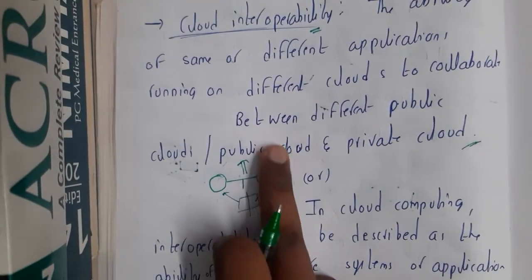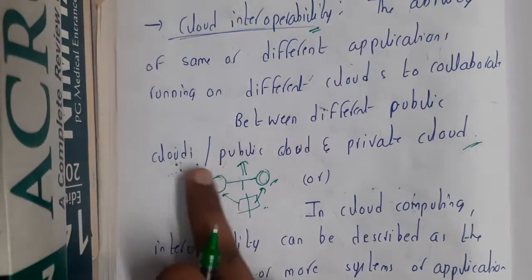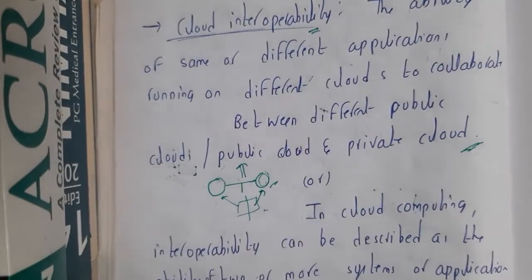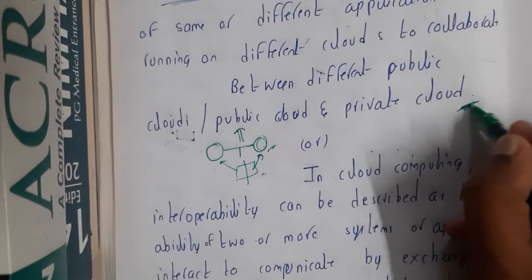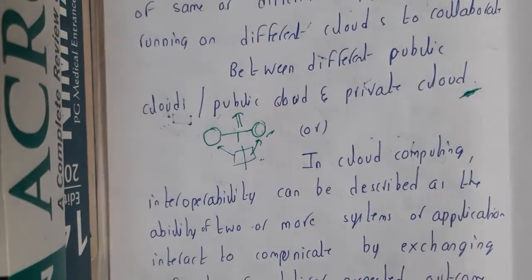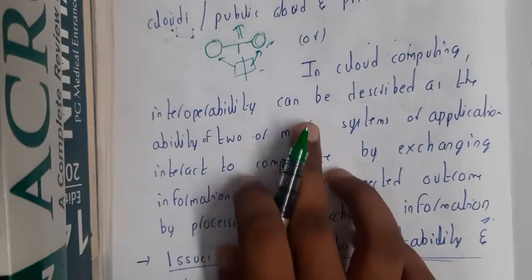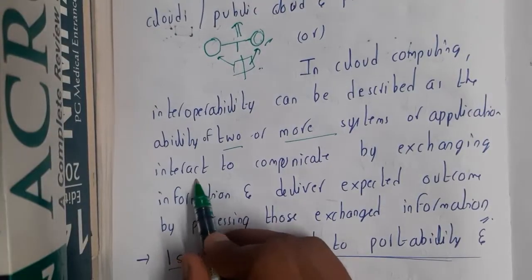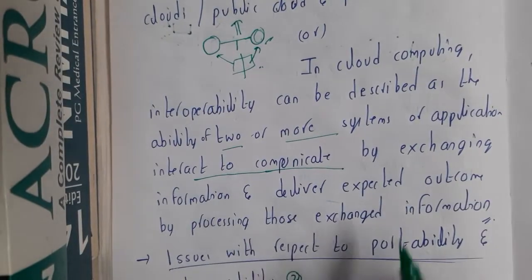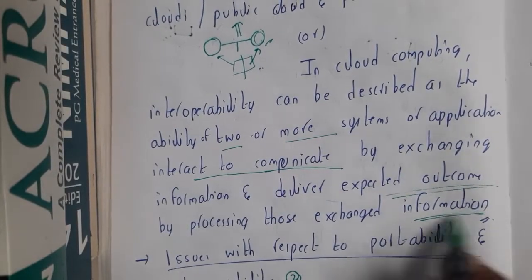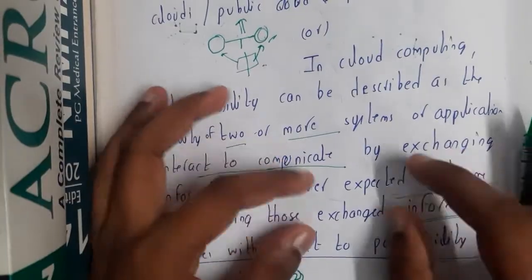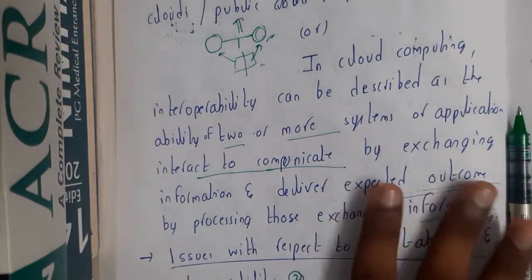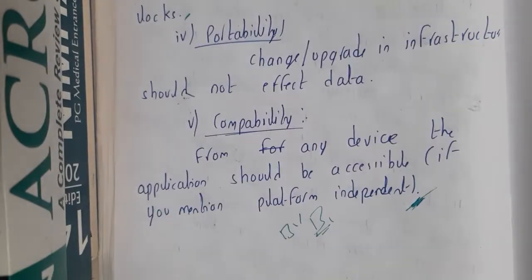This can be between different public clouds, or between public and private clouds. In cloud computing, interoperability can be described as the ability of two or more systems or applications to communicate by exchanging information and delivering expected output by processing those exchanged information. Basically, two clouds exchange the information they need and form a final result — that concept is nothing but interoperability.